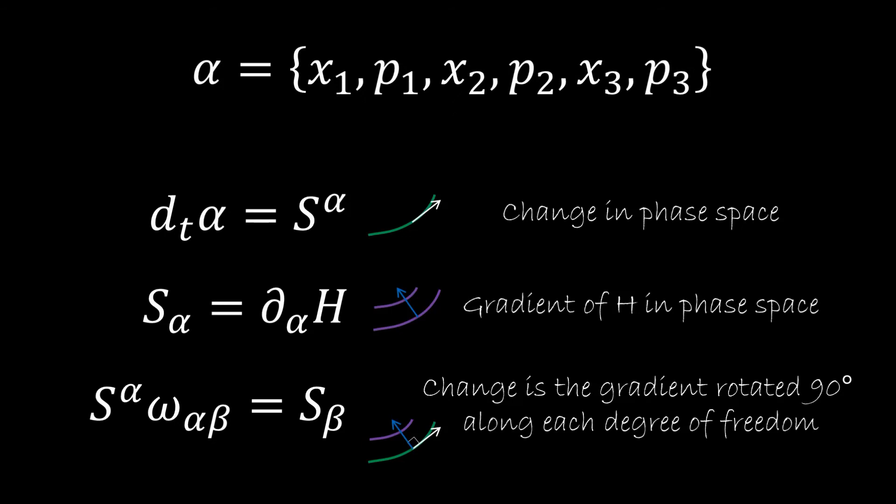Now, in terms of the alphas, we can write all the equations that we had before. We can say that the S upper alpha is the change in phase space. It's going to be the derivative of the trajectory in time. So it gives us the vector that is tangent to the curve and tells us where we are moving in the trajectory. The S lower alpha instead is the gradient of h. It's telling us where h is increasing in phase space. And the relationship between the upper alpha and the lower alpha is the 90 degree rotation. So the change in phase space is the gradient rotated 90 degree along each degree of freedom. So we are going to do one rotation for each degree of freedom.